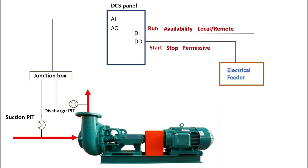Next we have digital output signals — those signals are start command, stop command, and permissive signals to start the motor. These are the basic control supply signals running between the DCS panel and the electrical feeder. From the electrical feeder, all these signals are processed and the main power supply goes to the motor, driving it and making the pump run.